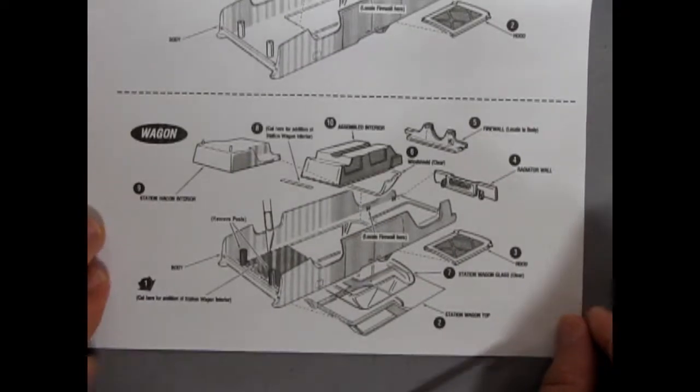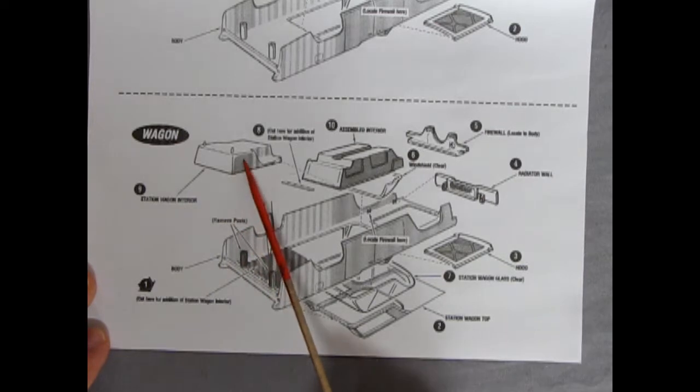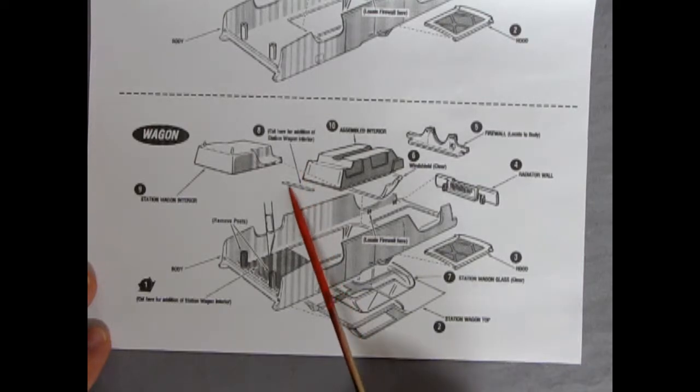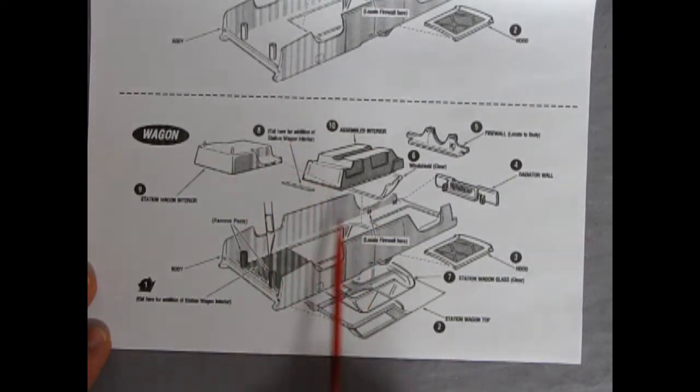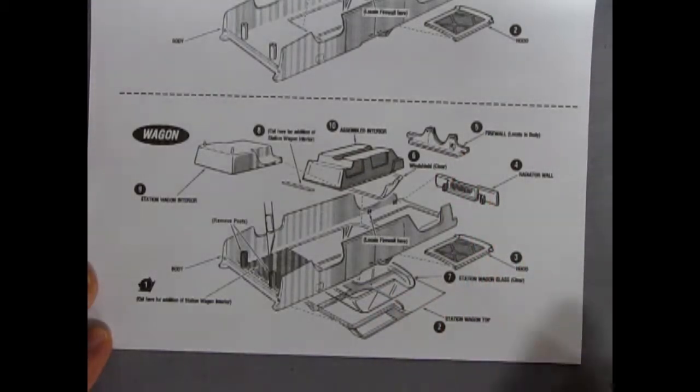So now at the bottom of the instruction sheet we get into the optional wagon. And they give you a wagon interior that you glue to the back of the stock interior. There's a little piece here describing how to cut this for your station wagon. And then on the body you're going to take your knife and cut along the back here and get rid of our peg and post thing. This tub will take its place and then we have our extended windows here for our station wagon top. And of course the firewall and the hood and the rad support and all that go in there.